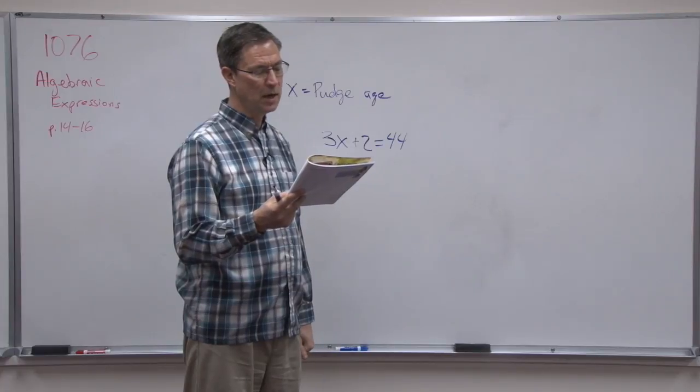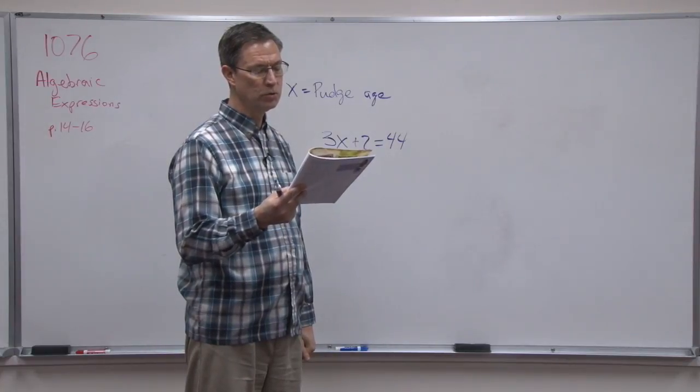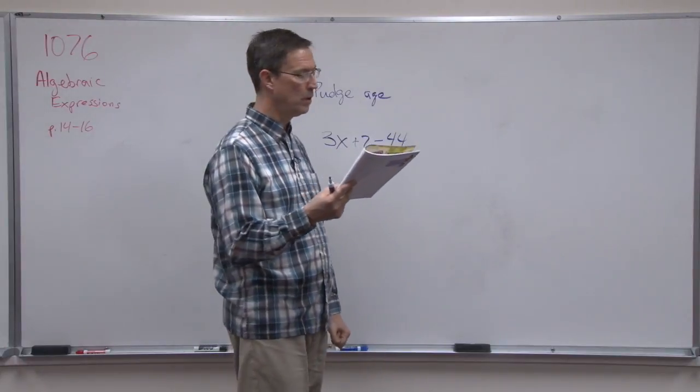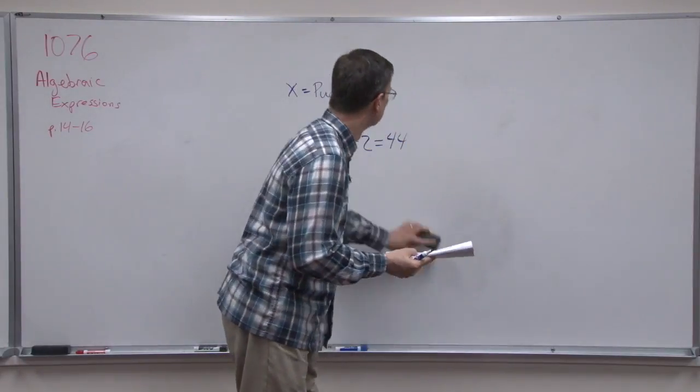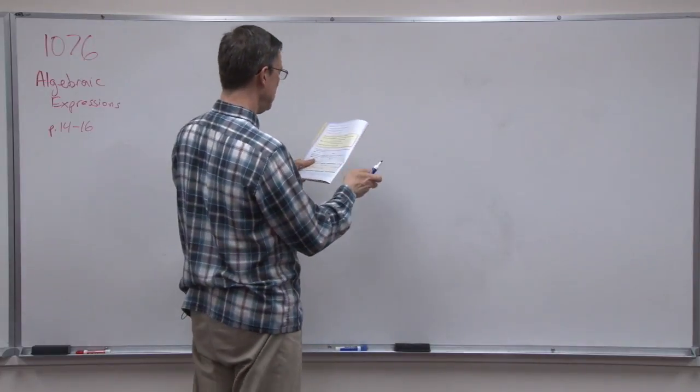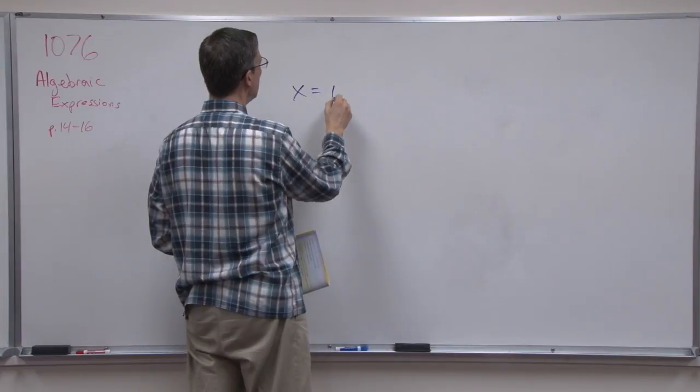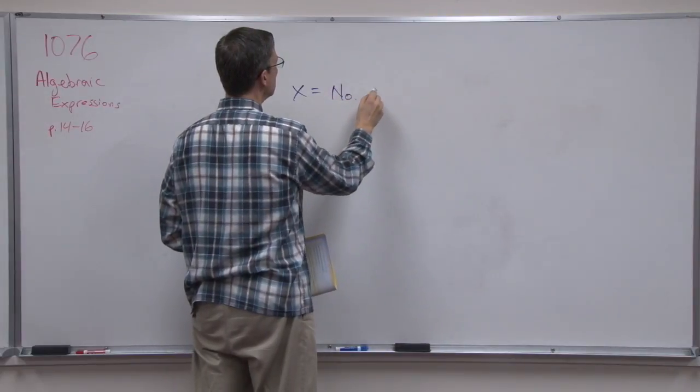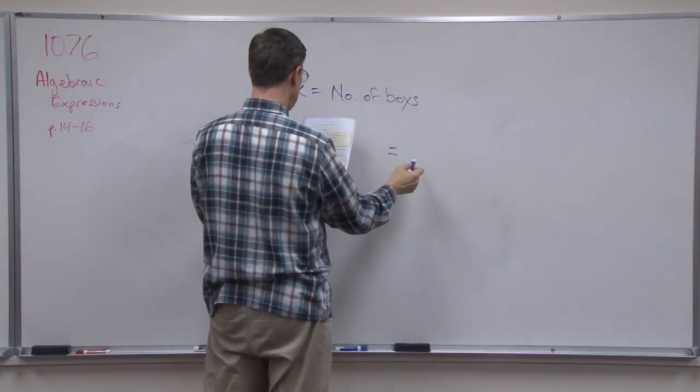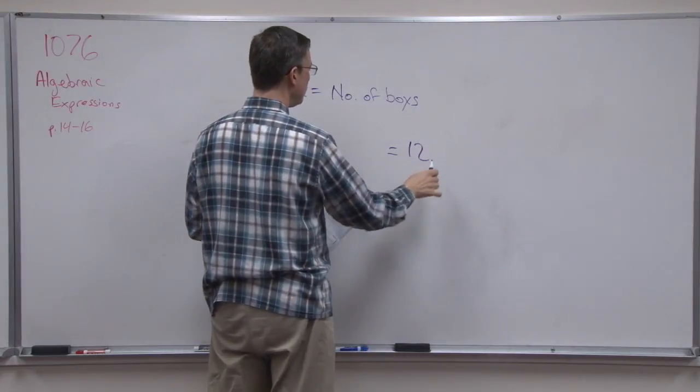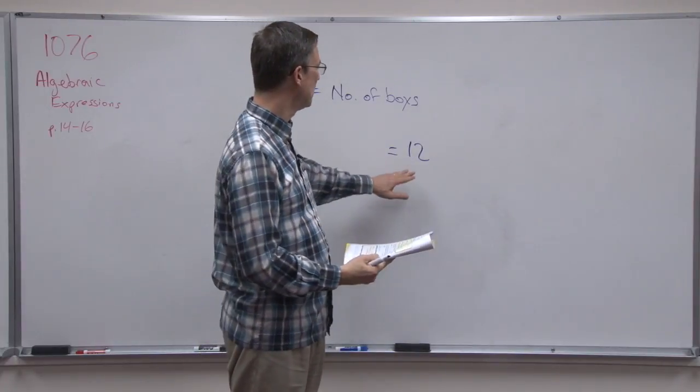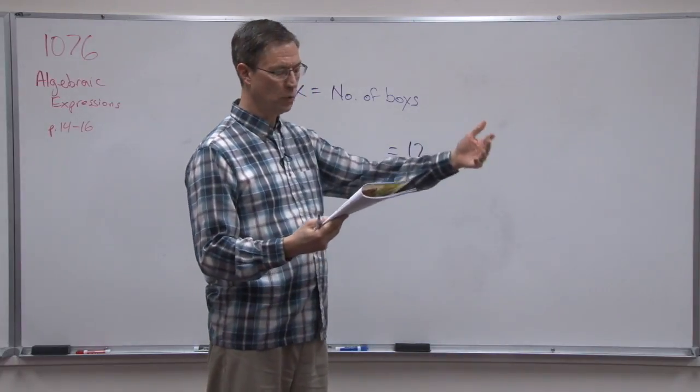Let's look at number 5. There are 12 girls in a youth group. That's 4 less than twice the number of boys. So we're going to let X equal the one thing we don't know, which is the number of boys. Now this problem tells us that there are 12 girls. So the 'is' or the 'are' in this case, that's what comes after the equals. There are 12 girls.